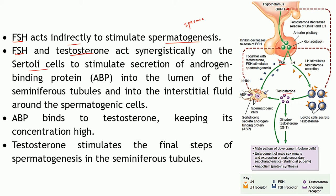Both FSH and testosterone act on the Sertoli cells to generate androgen binding protein, ABP. More and more ABP is released into the lumen of the seminiferous tubules and into the interstitial fluid. This ABP binds to testosterone, keeping the concentration of testosterone very high in that region. Since substances bound to proteins are restricted to the vascular compartment, this keeps testosterone levels high. Additionally, testosterone stimulates the final step in spermatogenesis within the seminiferous tubules.